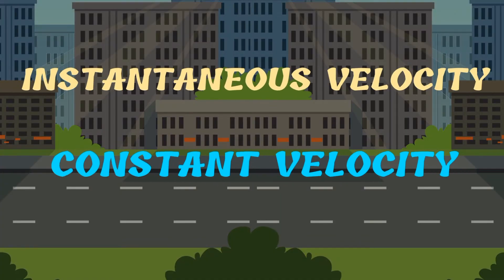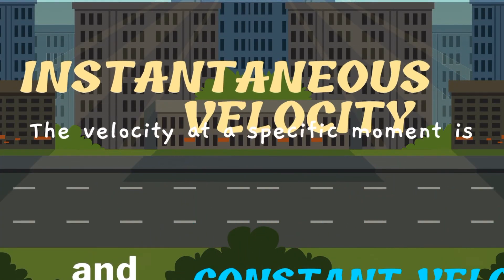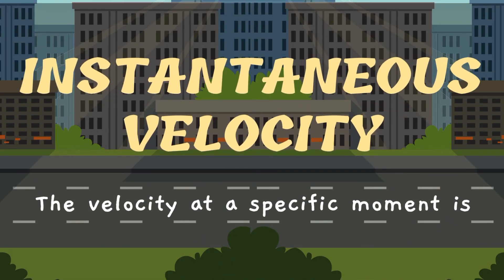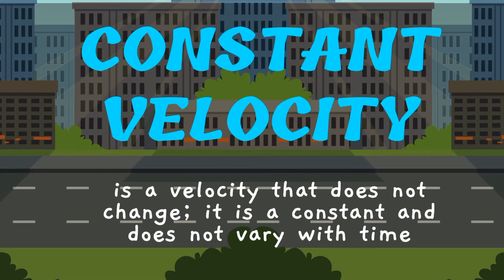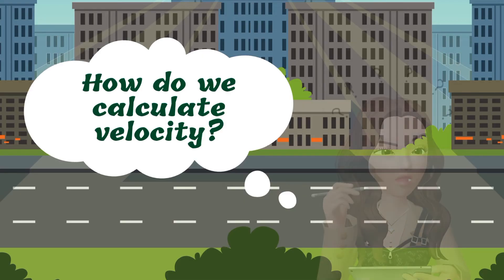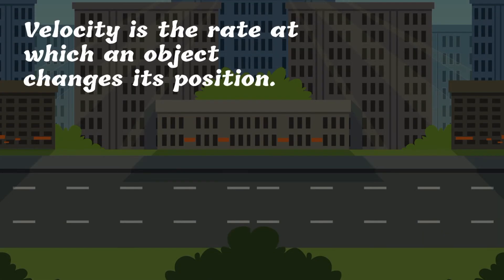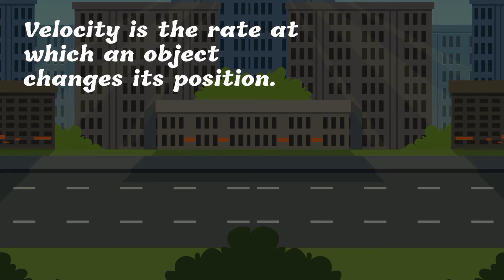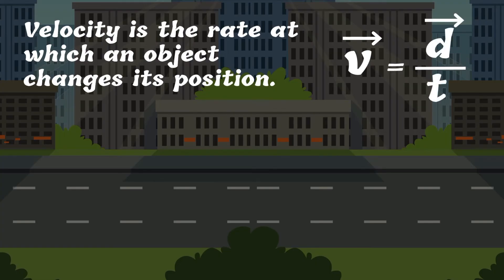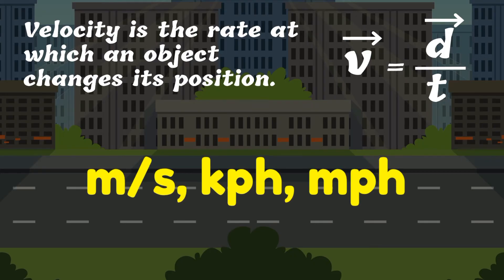Like speed, you can describe velocity as instantaneous or constant. The velocity at a specific moment is instantaneous velocity. A constant velocity is a velocity that does not change — it is constant and does not vary with time. How do we calculate velocity? Velocity is the rate at which an object changes its position. To calculate velocity, we use this equation: velocity equals displacement divided by time. The arrow on top of the variable indicates that a quantity is a vector quantity, meaning it has both direction and magnitude. The unit of velocity is the same as the unit of speed — it can be meter per second, kilometer per hour, or miles per hour.